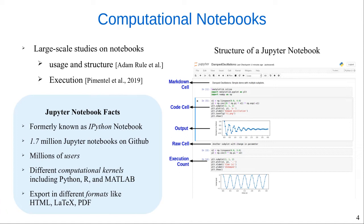Several large studies have emerged to analyze the different aspects of Jupyter notebooks. The work led by Adam Rule analyzed over 1 million publicly available notebooks from GitHub, focusing on the exploration of the usage and structure of Jupyter notebooks. Another recent study by Pimentel and team analyzed 1.4 million Jupyter notebooks from GitHub repositories created between 2013 and 2018, with a focus not only on the structure of notebooks but also on their execution and replication.